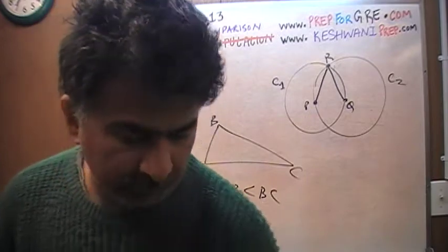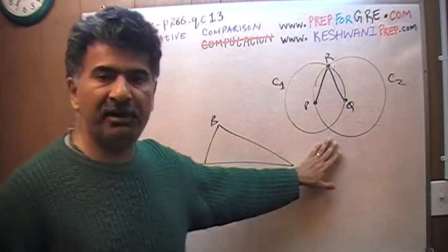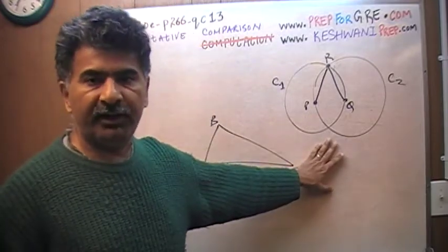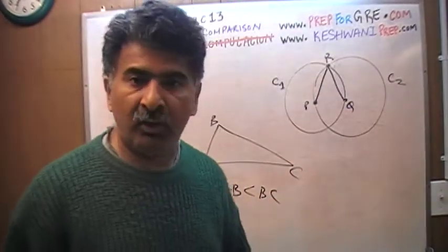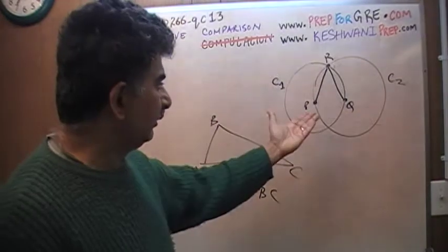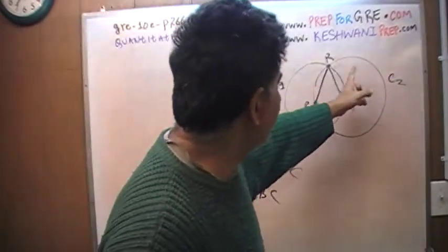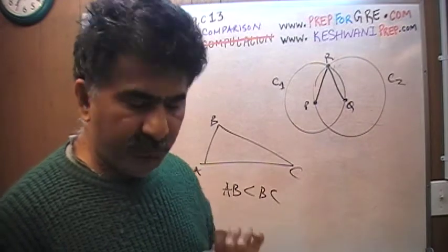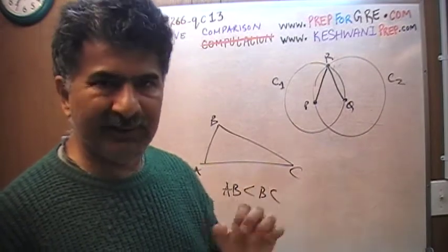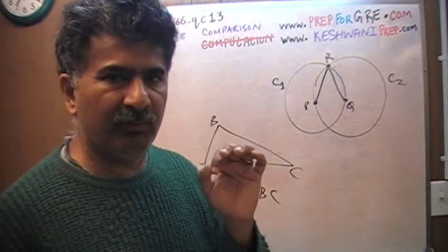The reason why people are having trouble on this question is because they are merely looking at it, they are just staring at it, and if you just stare at them, those two circles are purposely drawn to be of equal size. Here, of course, inadvertently, I ended up making this one just a little bit bigger, but if you look at the picture that they gave you, the two circles look exactly the same size, and they are given in same size on purpose.